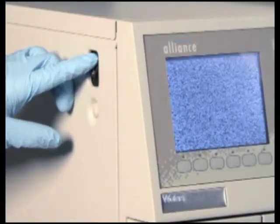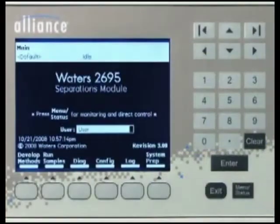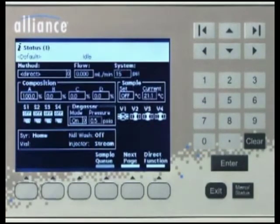Turn the 2695 separations module on. Press the menu status key to access the status screen and check to make sure the solvent flow is off and that there is no back pressure in the system.